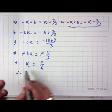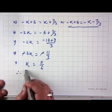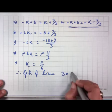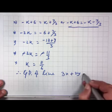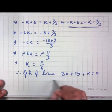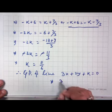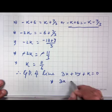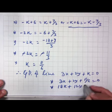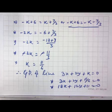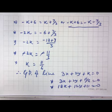So k = 11/6. The equation of the required line is 3x + 2y + 11/6 = 0, which gives 18x + 12y + 11 = 0 as the line equidistant from the two given parallel lines.